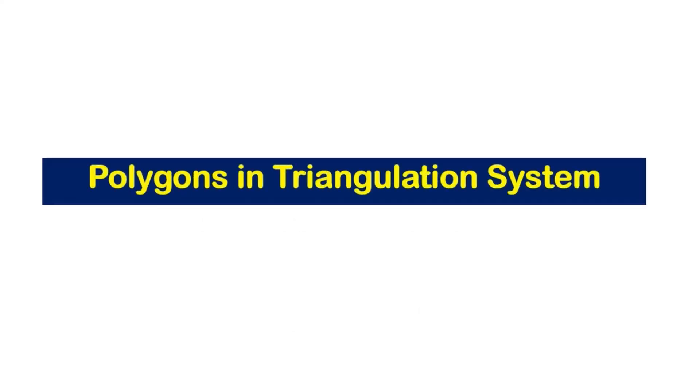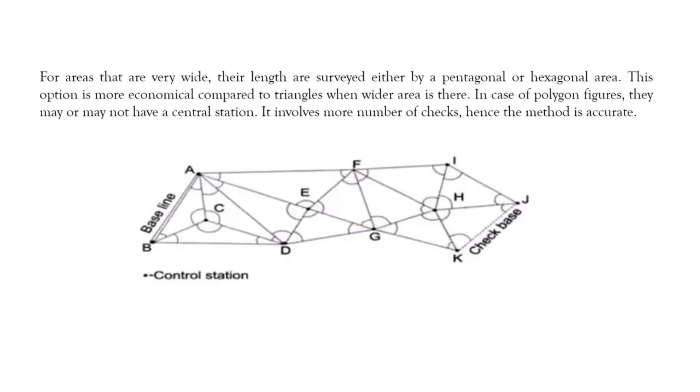3. Polygons for triangulation. For areas that are very wide, their length is surveyed either by a pentagonal or hexagonal area. This option is more economical compared to triangles when the wider area is there. In the case of polygon figures, they may or may not have a central station. It involves more checks, hence the method is accurate.